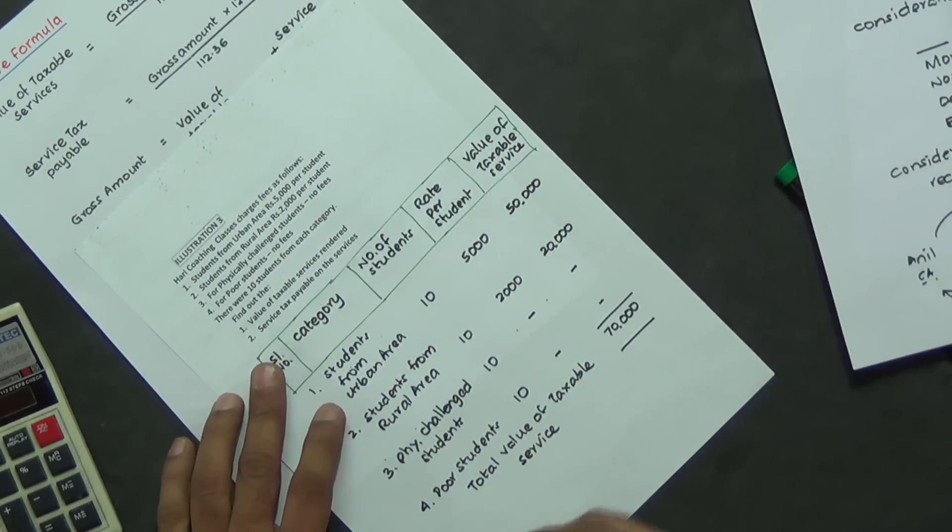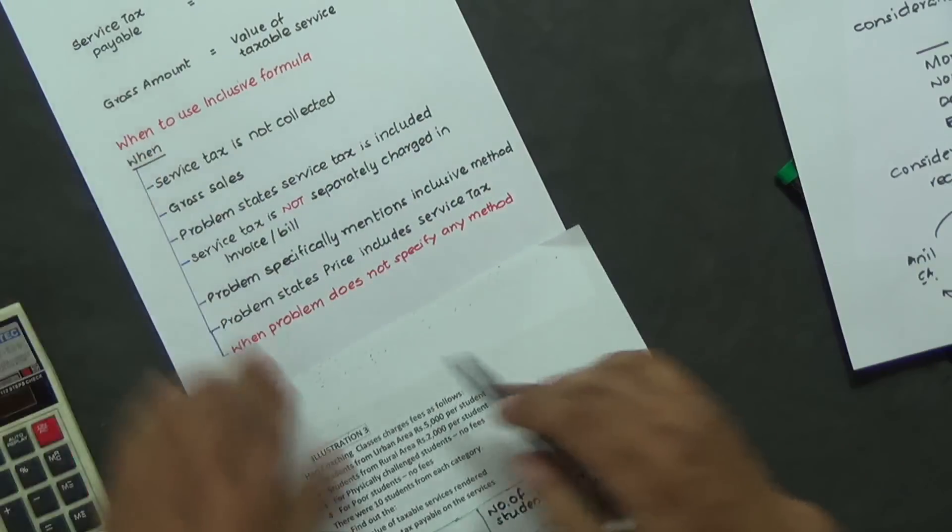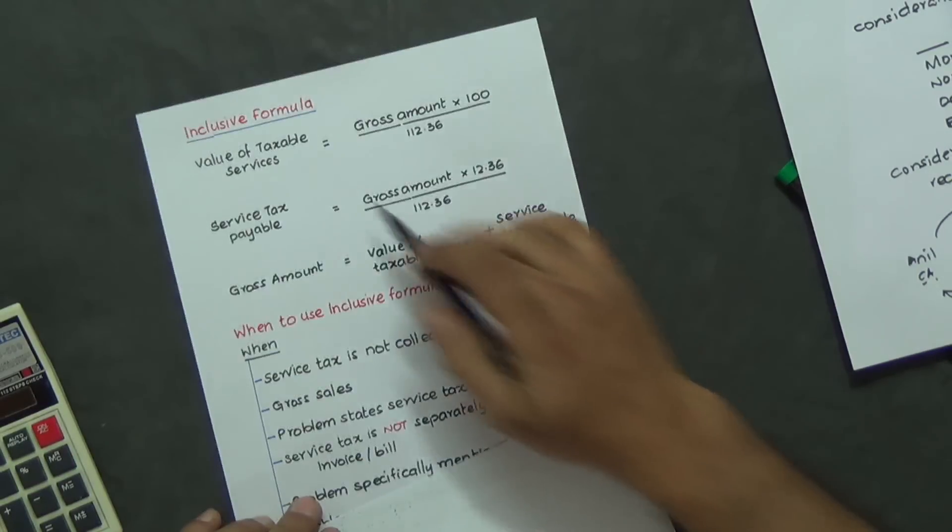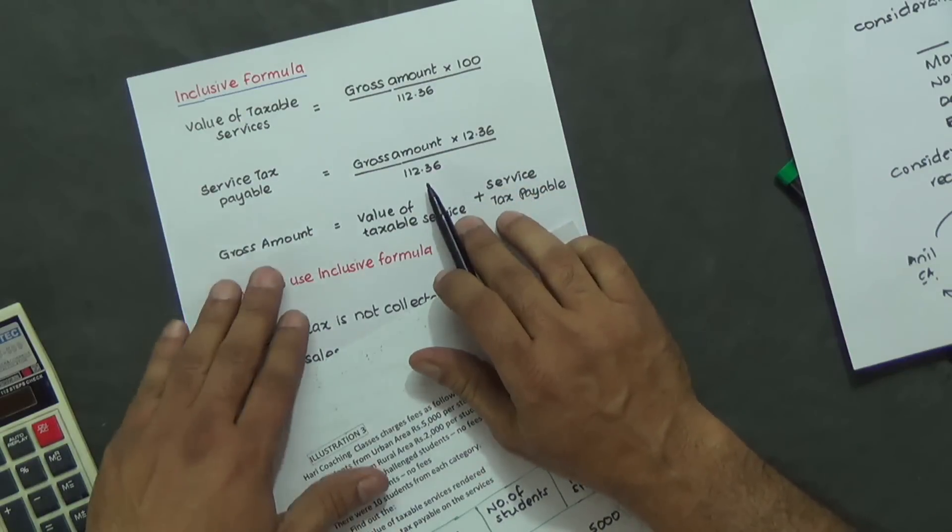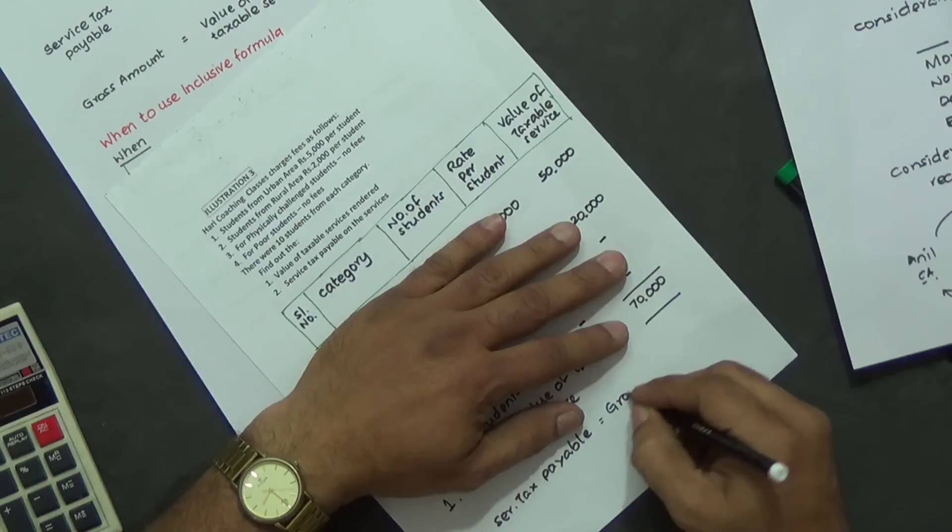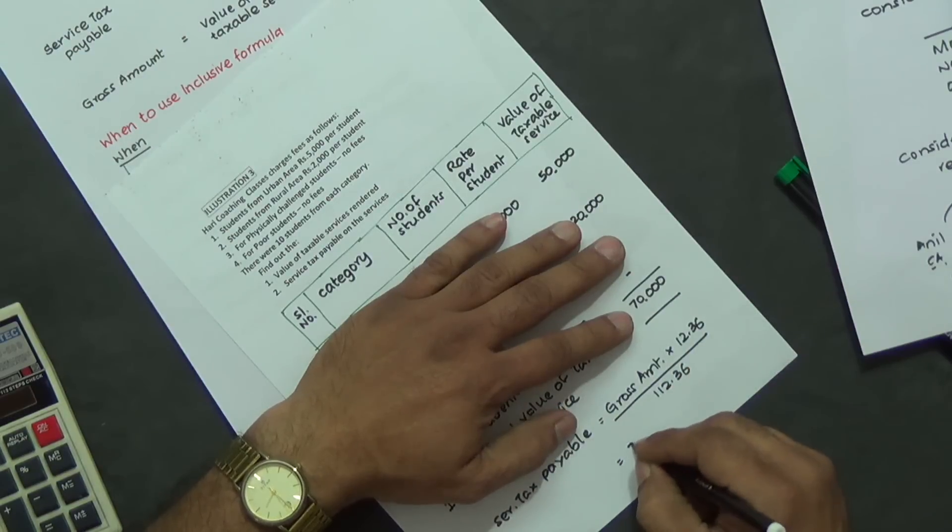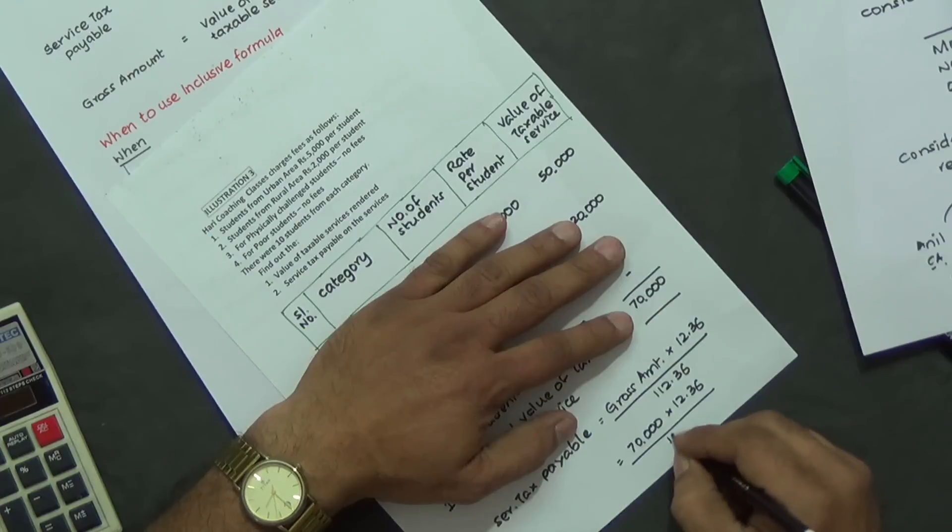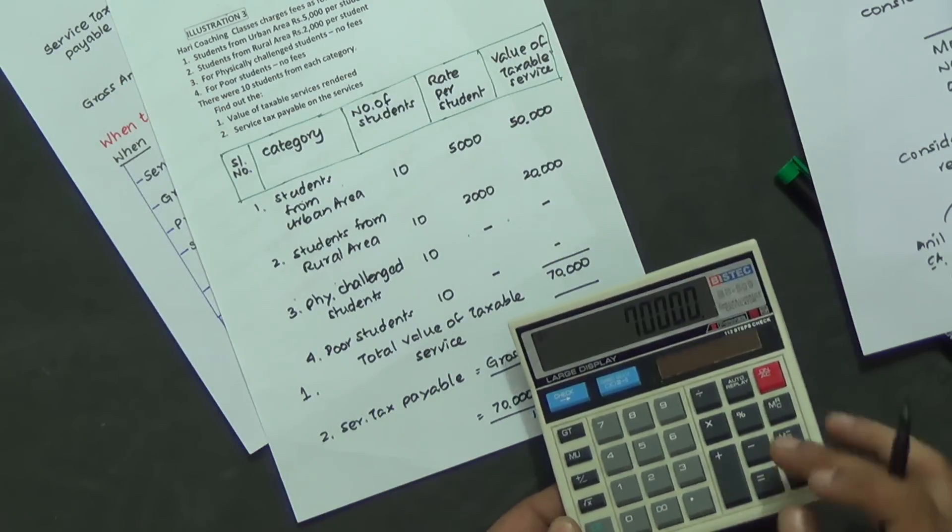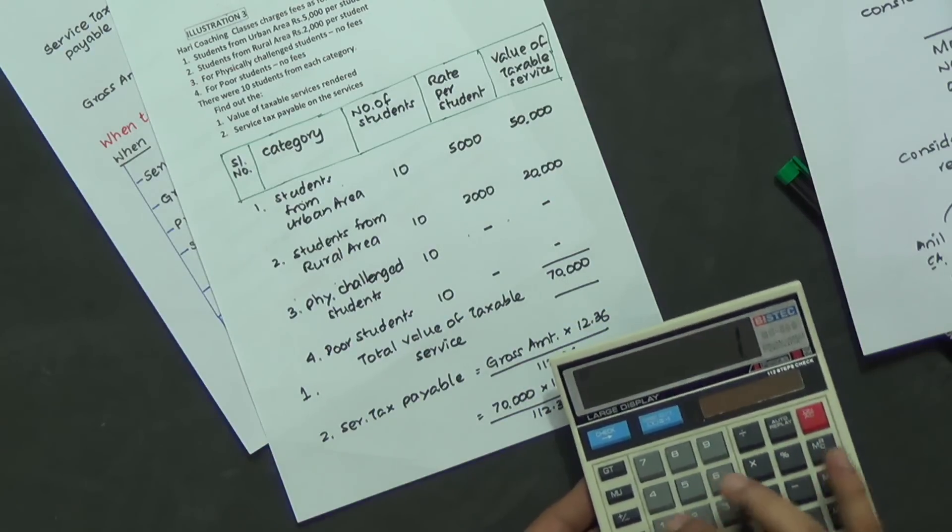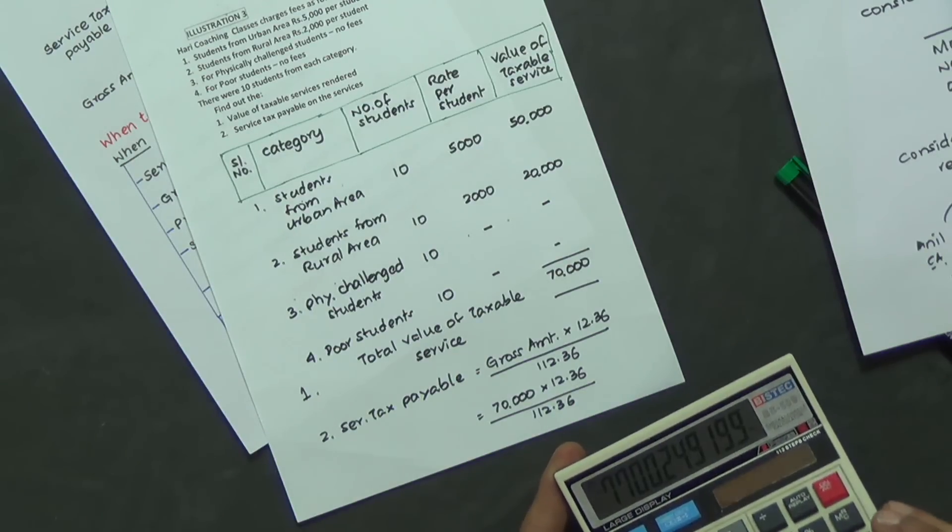Now we'll go on to service tax payable, question number two. The problem is silent about which method to be used. When the problem does not specify any method, we'll have to use inclusive formula. So inclusive formula is service tax payable equals gross amount into 12.36 divided by 112.36. So gross amount is, if we work this out on the calculator, it is 70,000 into 12.36 divided by 112.36.